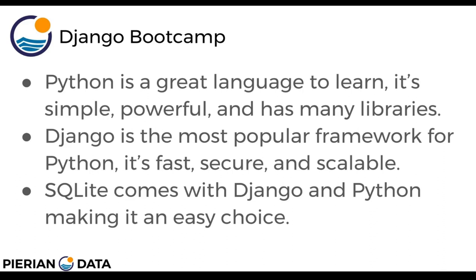Python is a great language to learn — it's simple, powerful, and already has many libraries. It's simple because the syntax is based on code readability and clarity, saving you a lot of time. It's also powerful, scalable, and has many libraries for applications such as machine learning, data visualization, and gaming. Django is the most powerful and popular framework for Python — it's fast, secure, and scalable, and it's used by major websites such as Pinterest, Instagram, and Bitbucket. SQLite comes with Django and Python, making it a very easy choice to use as the database.